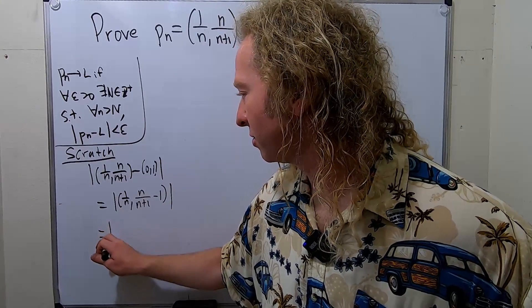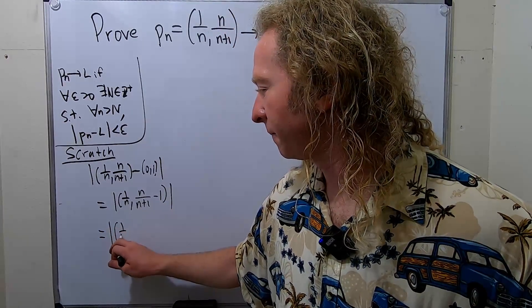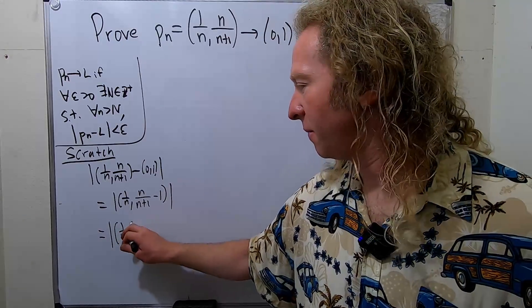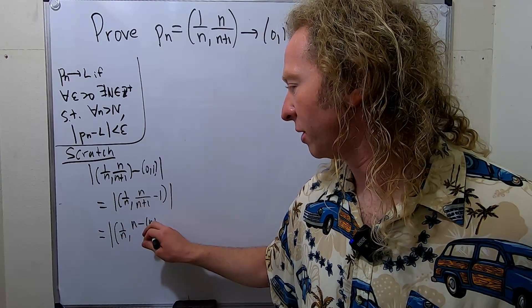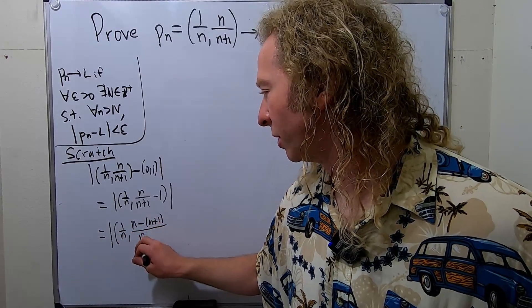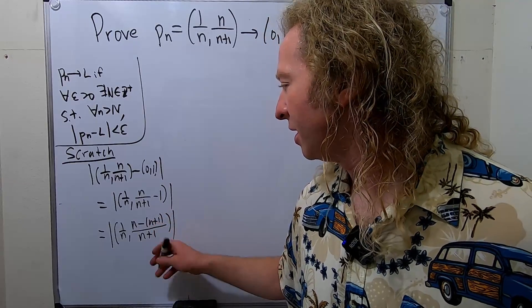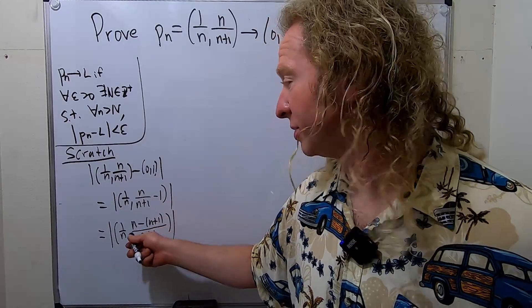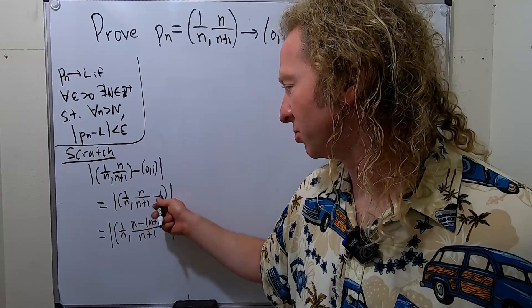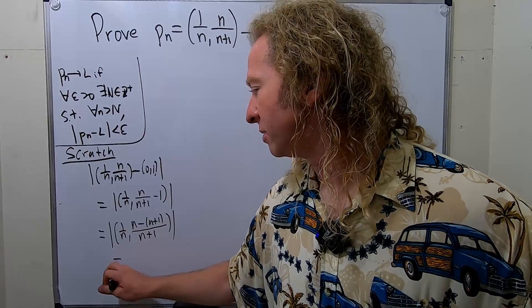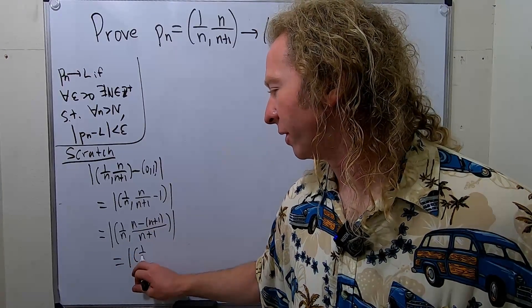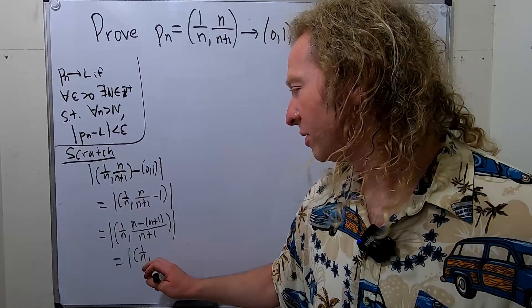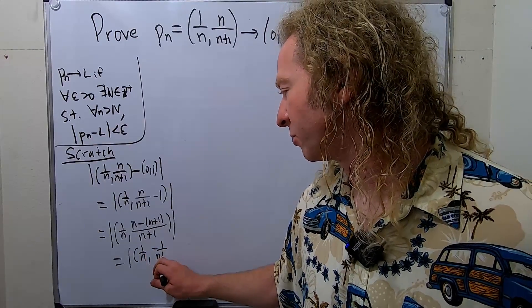So let's go ahead and do some math here. This is equal to the magnitude of (1/n, comma). Now, this is really n minus (n+1) over n+1. I skipped a step here, but it's (n+1) over (n+1), which is 1. This is equal to 1/n. And then these cancel. So you just get negative 1 over n+1.